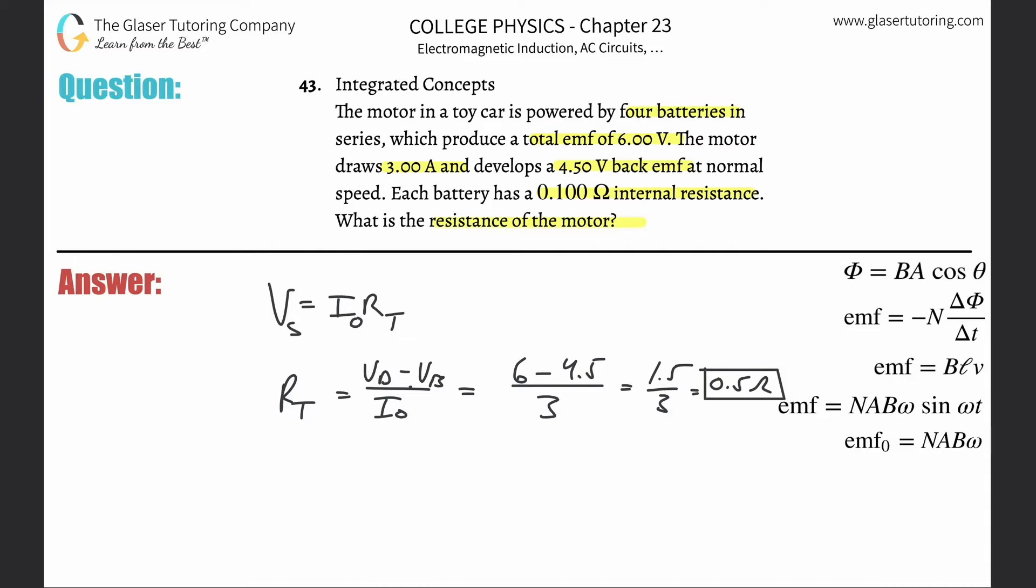All right, so this now represents the total resistance. But wait a minute, the resistance here, it's saying what's the resistance of the motor? That's the total resistance. So what you got to remember is that the total resistance here is basically a function of the total resistance of the batteries plus the resistance of the motor.